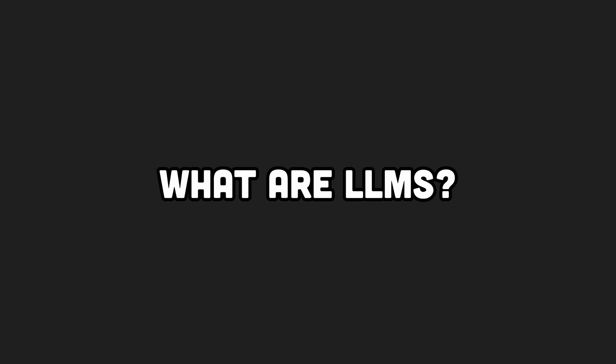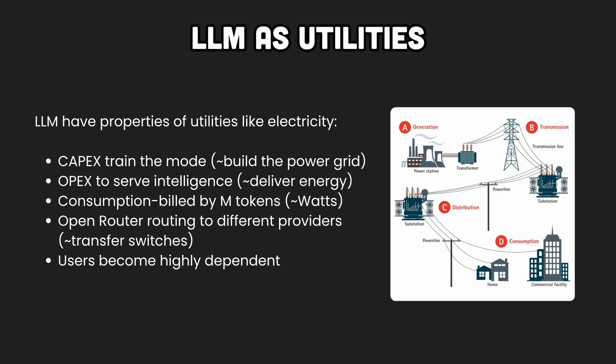Andrzej talks about how to think of LLMs, starting with a clever analogy between LLMs and utilities such as electricity. LLMs need significant CAPEX investment to train thousands of GPUs and data centers, similar to the cost of building a power grid. They also induce OPEX to serve intelligence over an increasingly standardized API — prompts, images, tools — like electricity is served over standardized APIs with determined voltage and sockets. You can notice how every LLM provider now has some compatibility with the OpenAI SDK API. Intelligence is consumption-billed per million tokens consumed, similarly to how you pay electricity based on watts used.